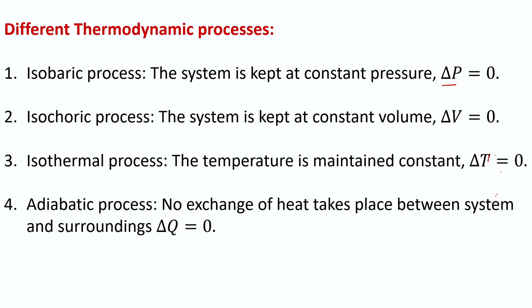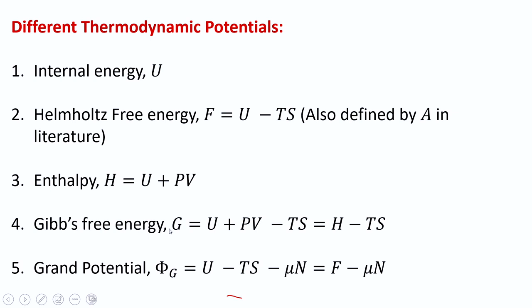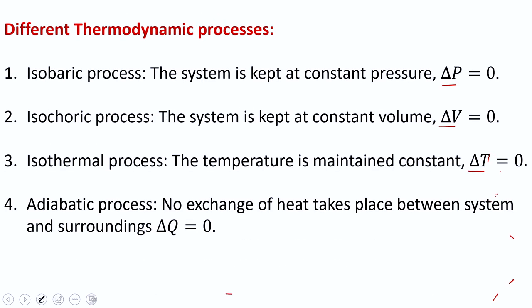Similarly, we call it the isochoric process, which is when the system is kept at a constant volume — delta V equals zero, meaning the volume of the system does not change. This can be achieved by keeping the piston of a container at the same position. Then there are isothermal processes where the temperature is maintained so that delta T equals zero. We also have the adiabatic process, where no exchange of heat takes place between the system and the surroundings — delta Q equals zero.